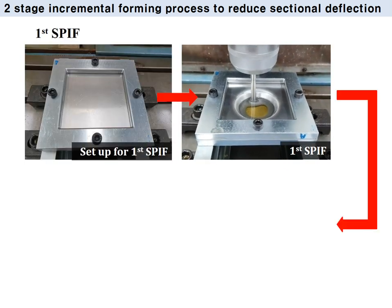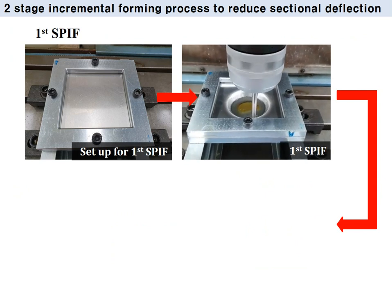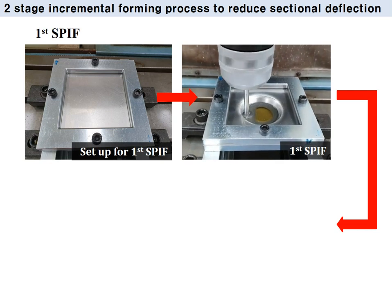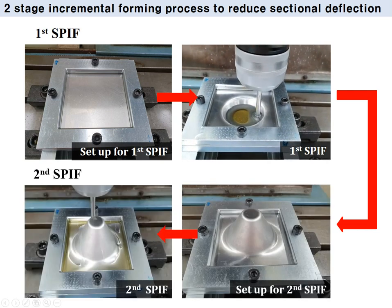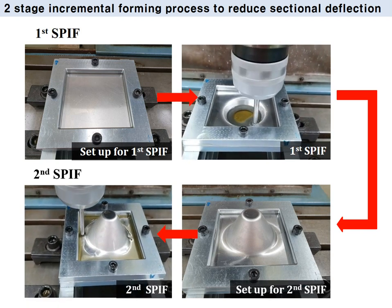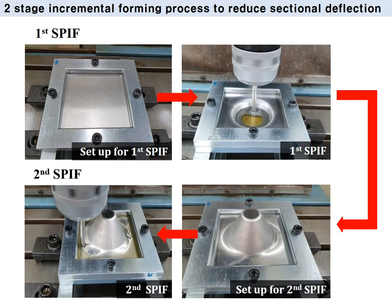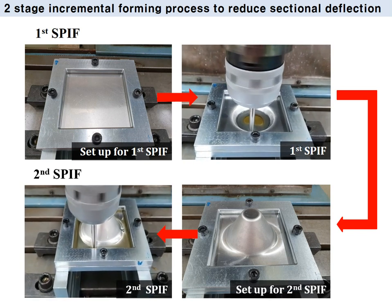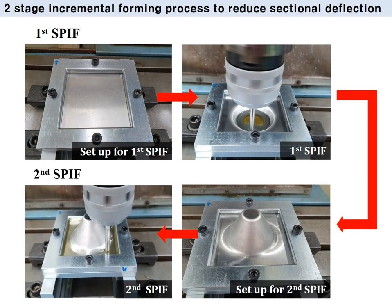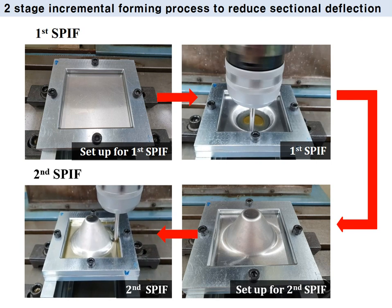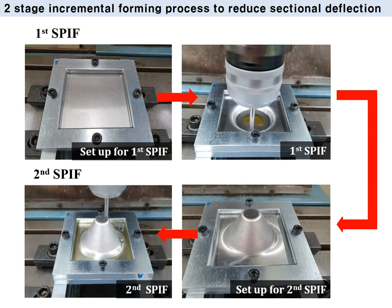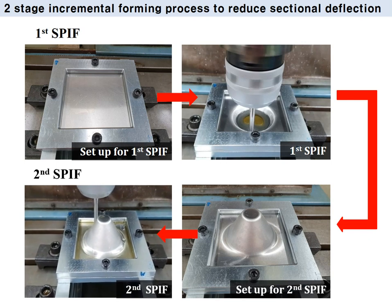In this movie, you can see the detailed procedure of the two-stage incremental forming process. After finishing the first incremental forming process, the sheet is rotated. After that, the lower round region, where the section deflection occurs, is pushed with the tool. Finally, the section deflection and the skirt springback decrease. In this work, we studied the two-stage incremental forming process and its effects on the final geometry.